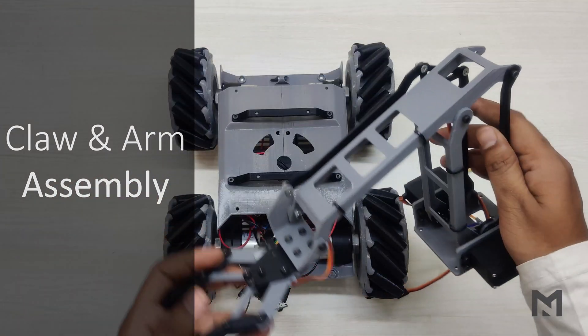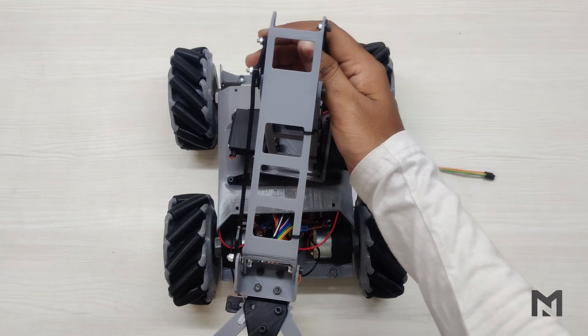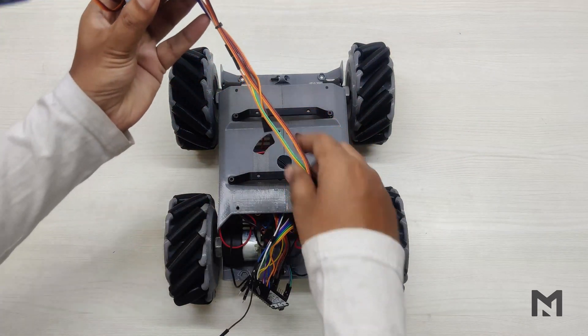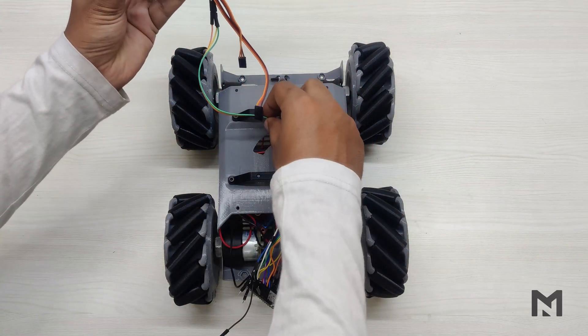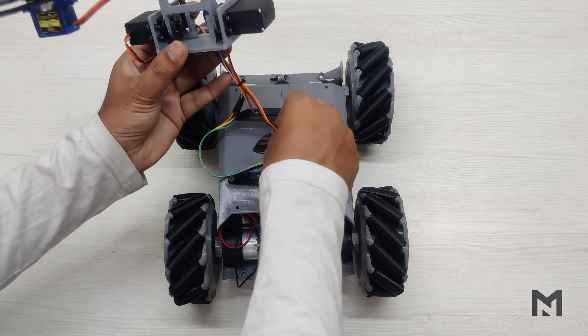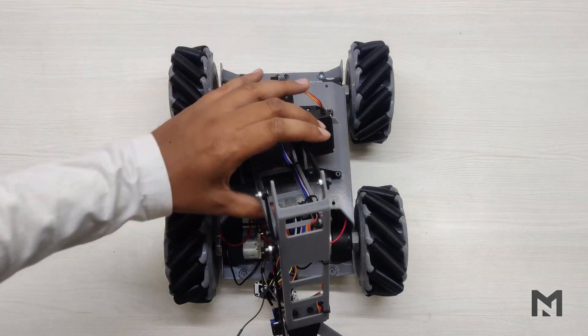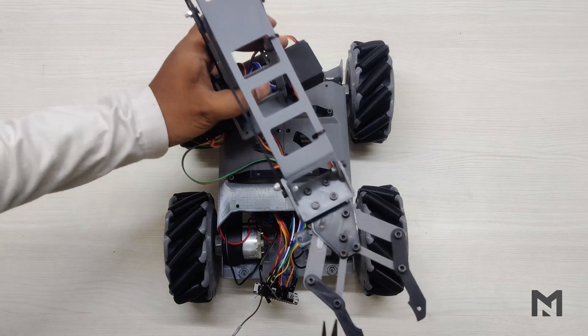Now we will attach the mechanical arm to the top of the robot frame. First insert the servo wires into the center hole and carefully pull them from the front section. Use nose plier to carefully pull the wires.